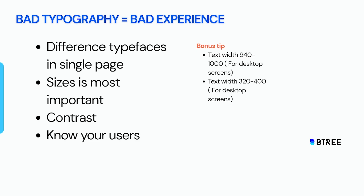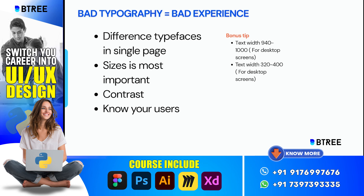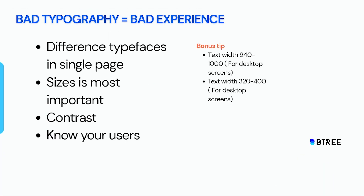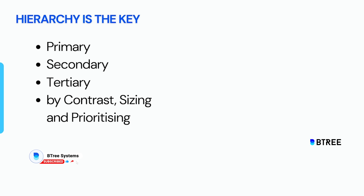A bonus tip: for desktop websites, use a text content width of 940 to 1000 pixels maximum. For mobile screens, use 320 to 400 pixels. Next is hierarchy — there are three important levels you need to choose: primary elements, secondary elements, and tertiary elements.